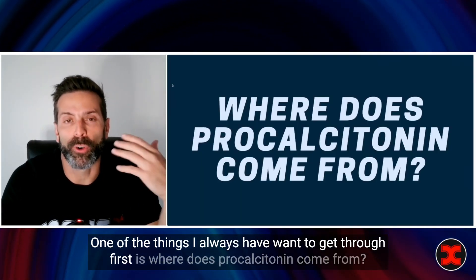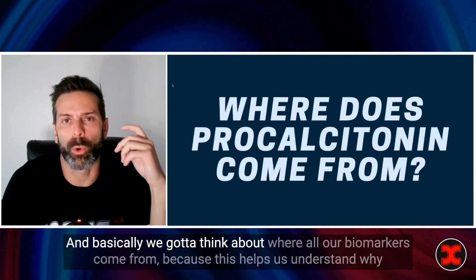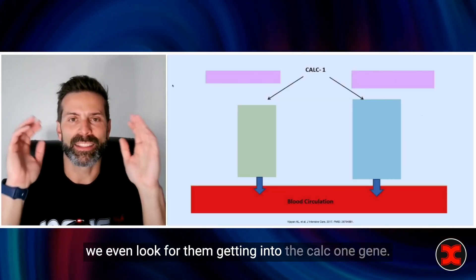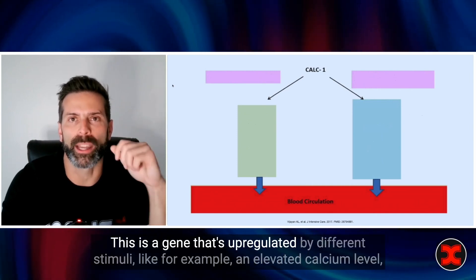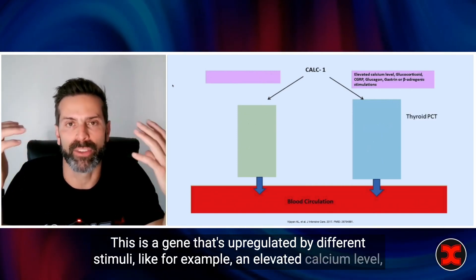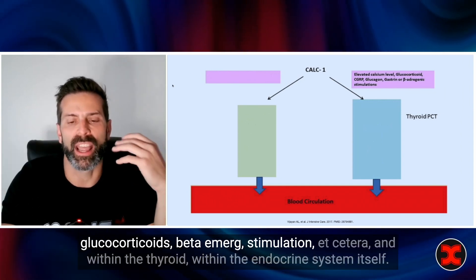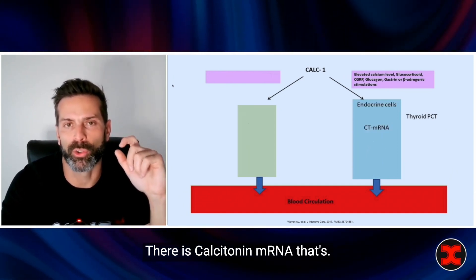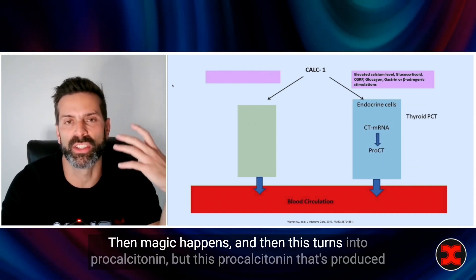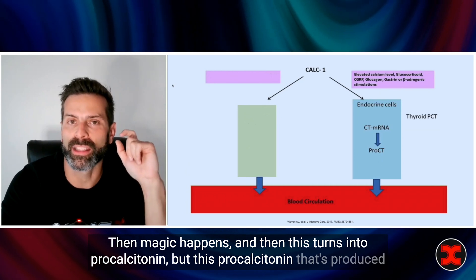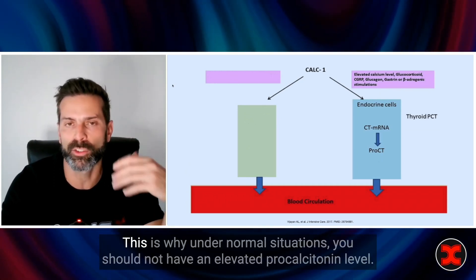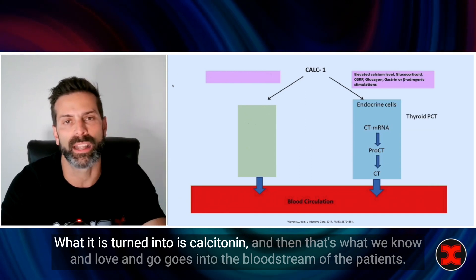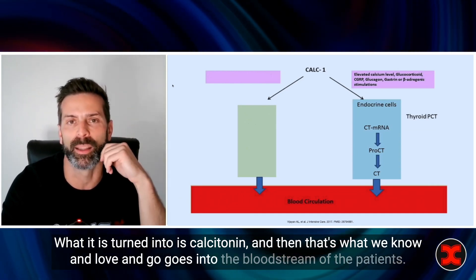One of the things I always want to get through first is where does procalcitonin come from? We have to think about where all our biomarkers come from because this helps us understand why we even look for them. Getting into the Calc1 gene, this is a gene that's upregulated by different stimuli, like an elevated calcium level, glucocorticoids, beta-adrenergic stimulation, etc. Within the thyroid and endocrine system, calcitonin mRNA is produced, and then this turns into procalcitonin. But procalcitonin produced in the thyroid is not secreted into the bloodstream — this is why under normal situations you should not have an elevated procalcitonin level. It is turned into calcitonin, which goes into the bloodstream.